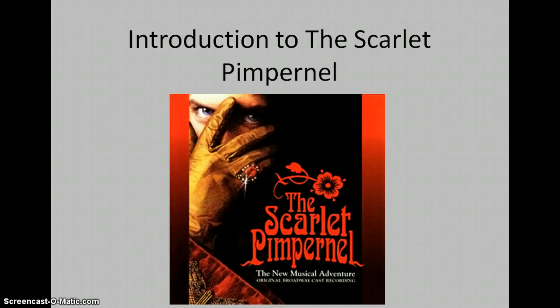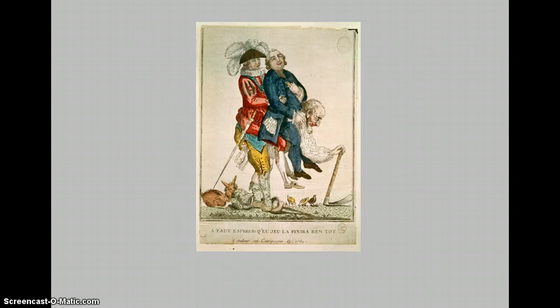The Scarlet Pimpernel was written during the French Revolution, where France's privileged class — the nobility and the clergy — governed the country, while the productive class was heavily taxed to foot the bill. Right here you see the cartoon we talked about in class depicting the struggle. The peasant is literally supporting and carrying the clergy and the upper class.